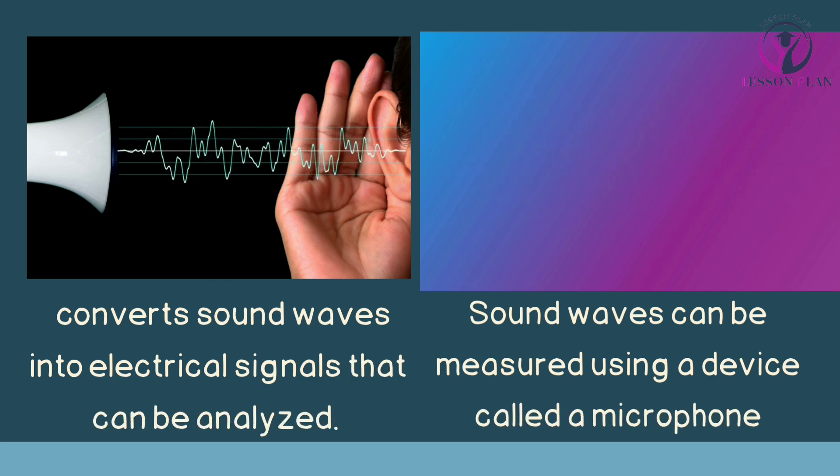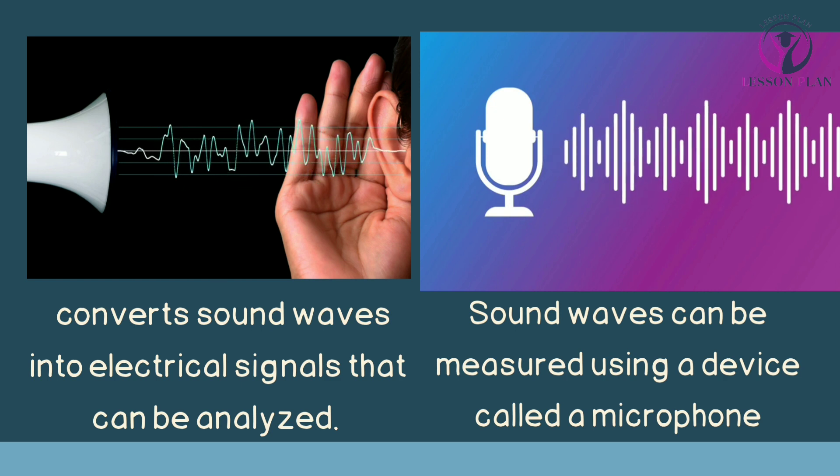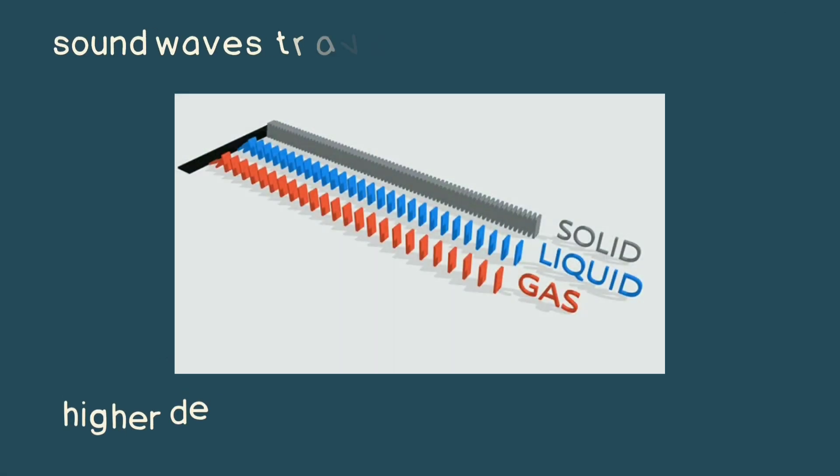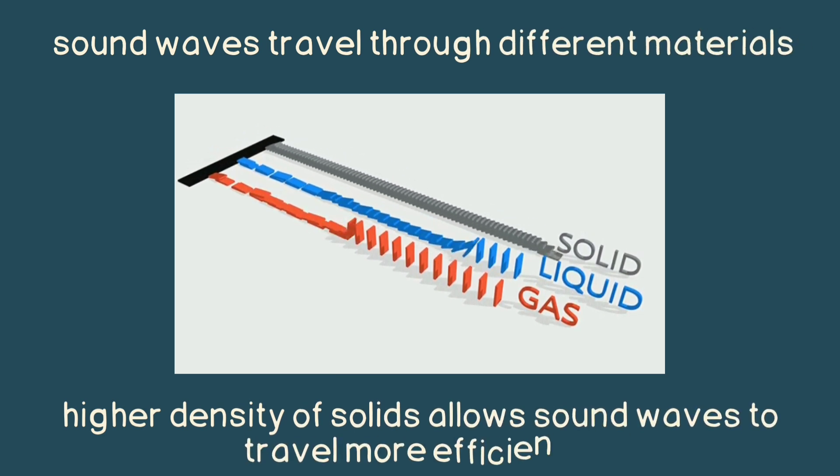Sound waves can be made using a device called a microphone, which converts sound waves into electrical signals that can be analyzed. Sound waves can also be created by a variety of sources, such as musical instruments, human voices, and even natural phenomena like thunder.